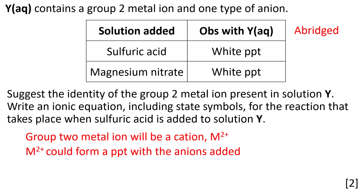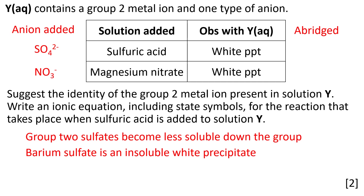The group 2 metal ion will be a positive ion — a cation. The cation could react to form a precipitate with any anions that are added. Sulfate ions, SO4 2−, are added from the sulfuric acid. Nitrate ions, NO3−, are added from the magnesium nitrate. Nitrate compounds are mostly soluble and tend not to form precipitates.